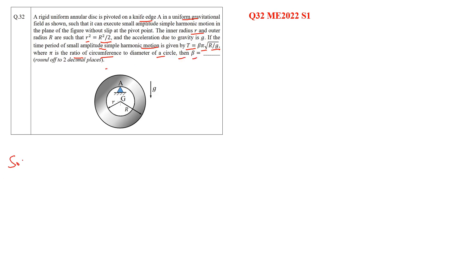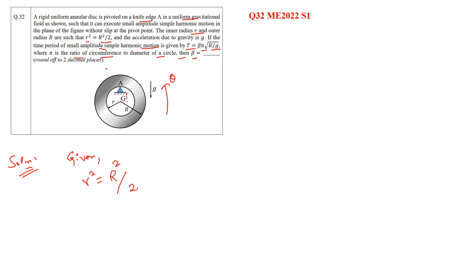We will start by applying the torque method. Given that R² = r²/2, we assume the disk is rotating in the anti-clockwise direction and is disturbed by a small angle theta. The weight mg acts at the center of gravity of the disc.